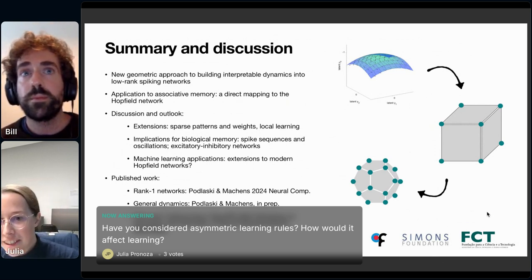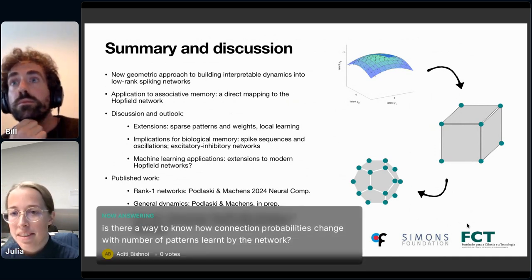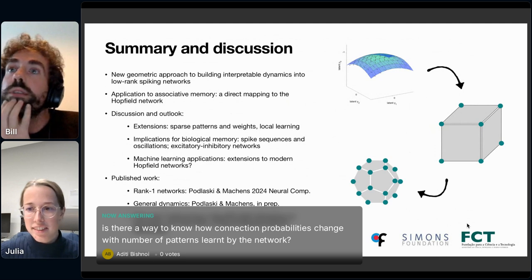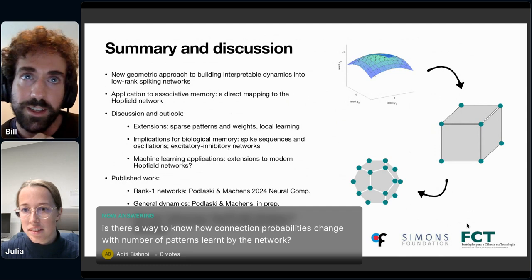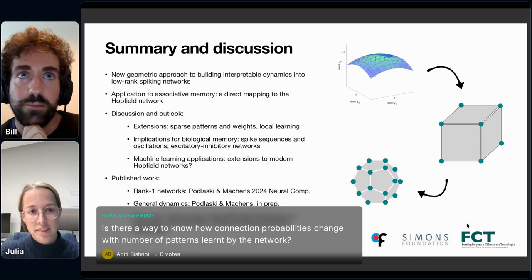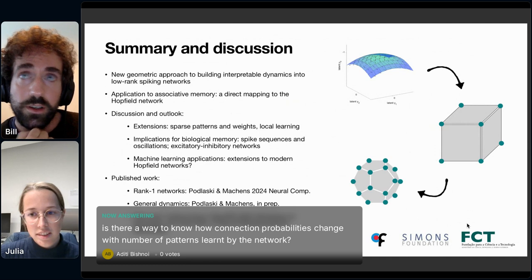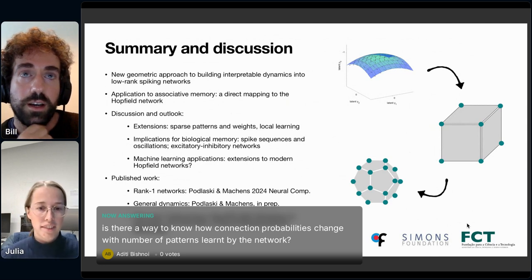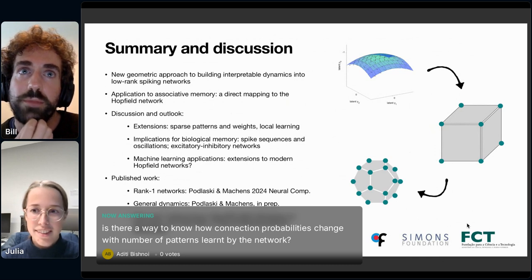And then the last question is from Aditi. Is there a way to know how connection probabilities change with number of patterns learned by the network? Yeah, I mean, I would say generally there's a lot of interesting things to explore in the connectivity that we haven't done yet. I think thinking about connection strength and probability is an interesting one there. The network that we end up with is also all connected, so generally speaking there will always be a connection between neurons. But we also have ideas about how to make it more sparse.